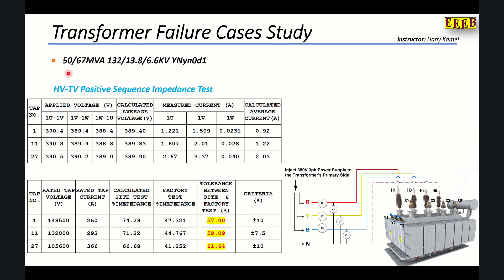We have a case study for a 50 over 67 MVA transformer. 50 is the ONN rating and 67 is the ONF rating. The voltage rating is 132, 17.8, 6.6 kV and vector group YN, YN, D1.